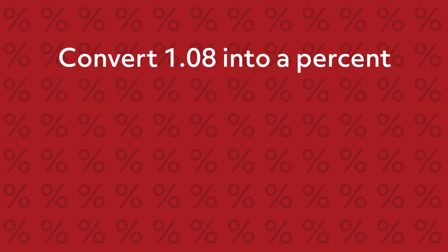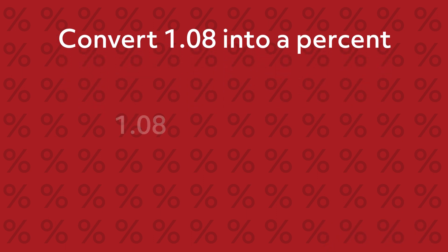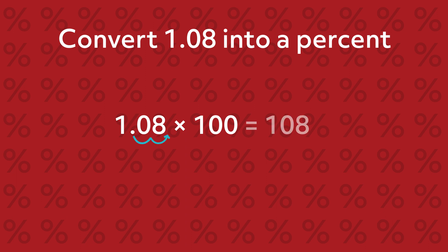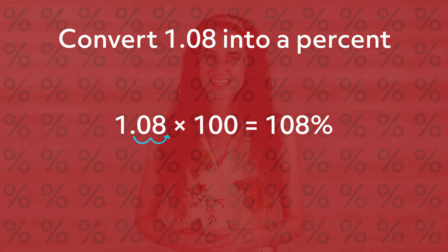Now that you've tried this one, let's take a look at it. To convert 1.08 into a percent, multiply the decimal by 100. Since multiplying by 100 moves the decimal point 2 spaces to the right, 1.08 times 100 equals 108. Therefore, the equivalent percentage is 108%. Nice work!